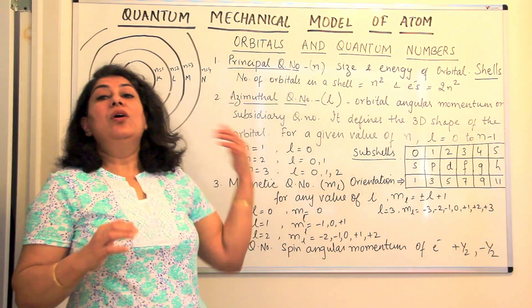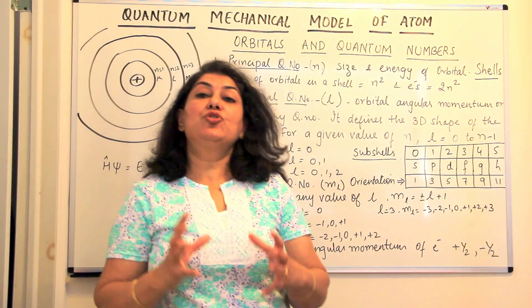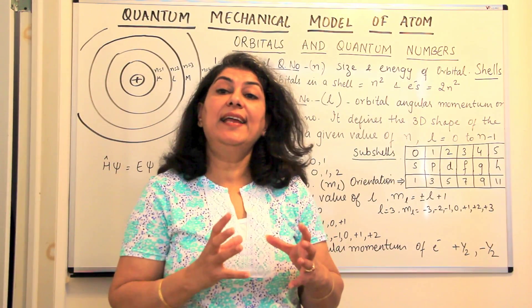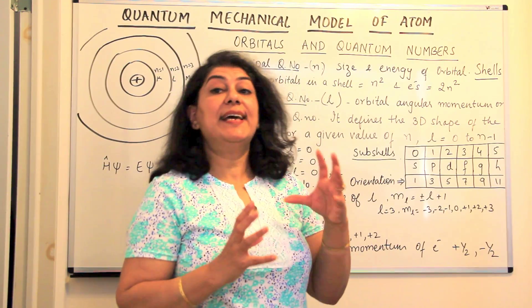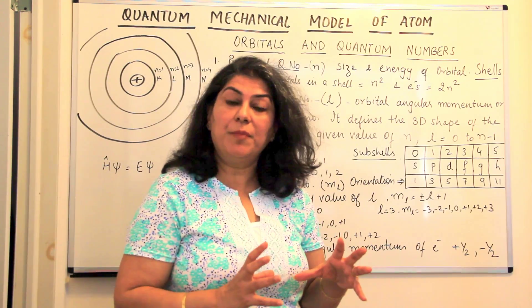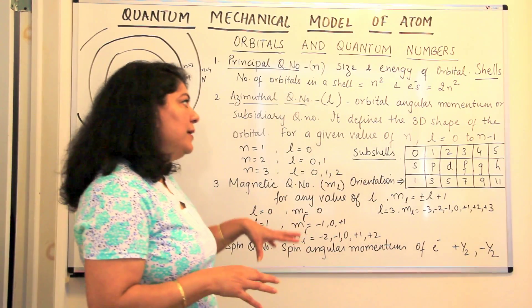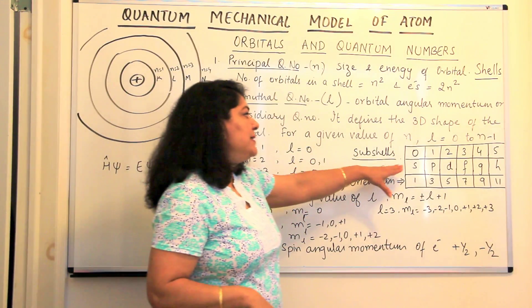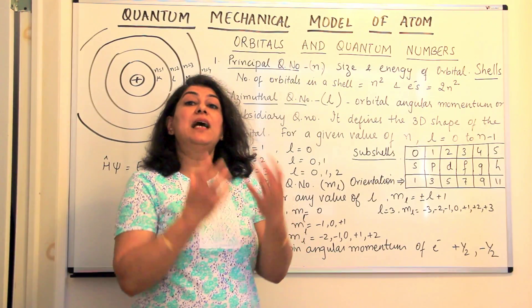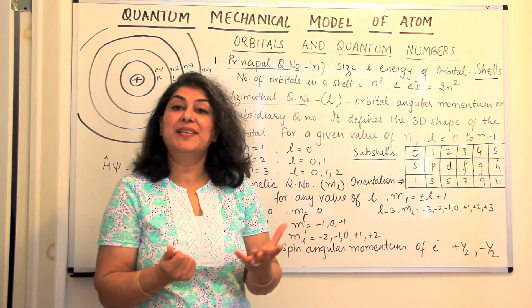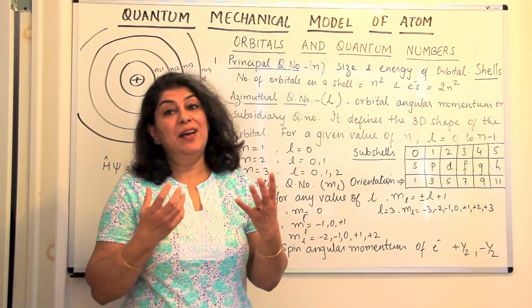So we now come to the end of the second quantum number — the azimuthal quantum number — and we have learnt that it tells us the number of sub-shells present in a shell.